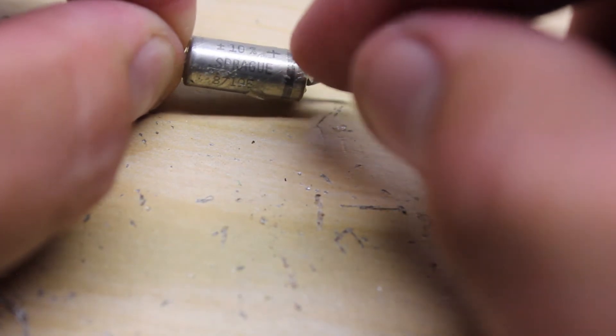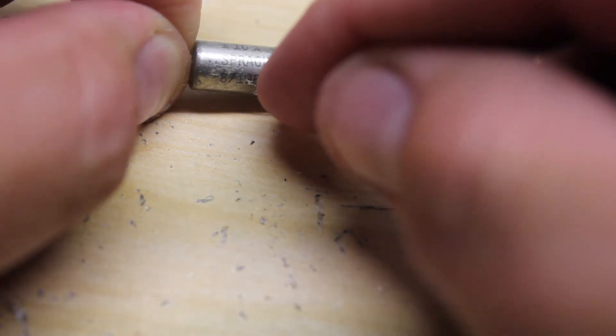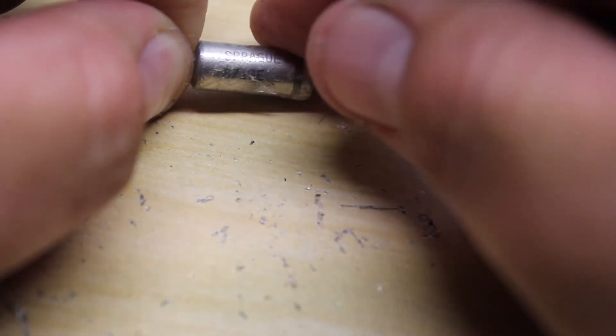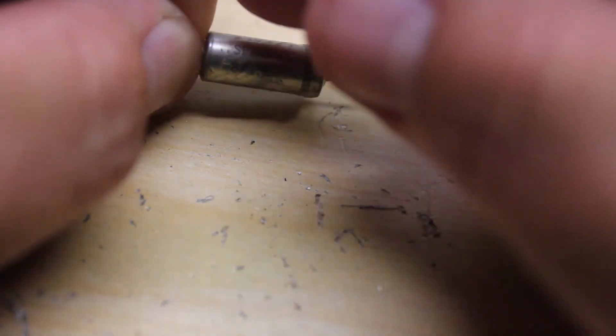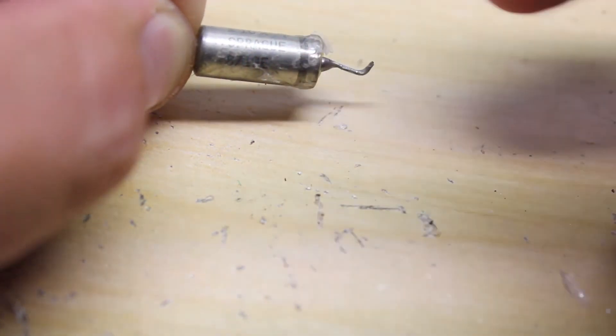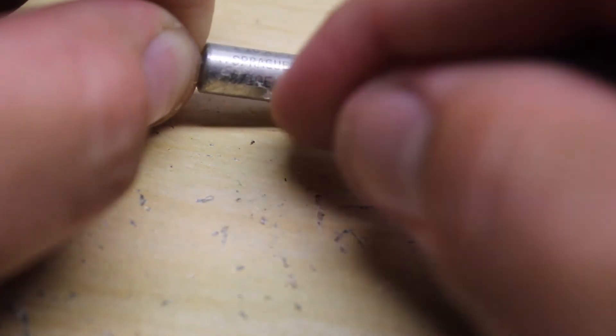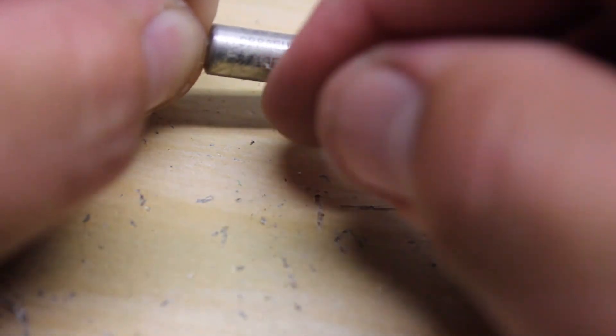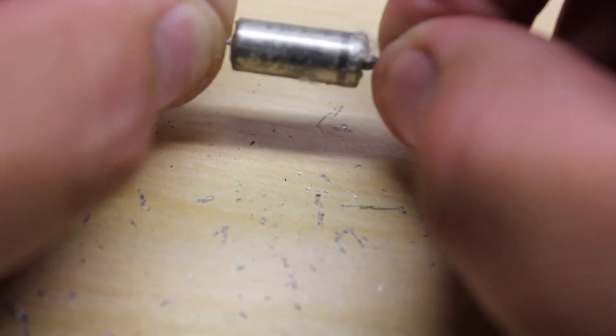Sometimes they have like an engraved, well I don't know how to explain it, but it'll have like an engraved little rivet, or no not a rivet, like a dip in the tube going all the way around signifying the positive side.